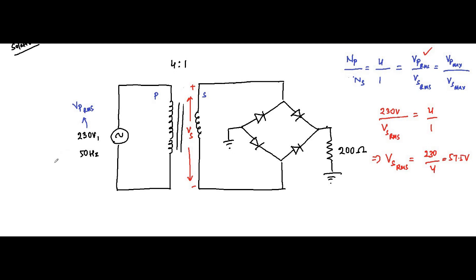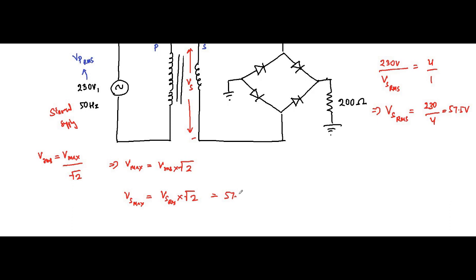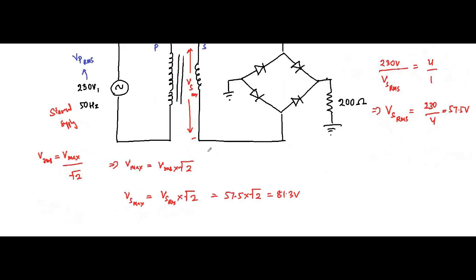This is a sinusoidal supply. For a sinusoidal wave, the RMS value equals V_max divided by root 2, which means V_max equals V_RMS multiplied by root 2. So the maximum value of the secondary winding voltage is 57.5 into root 2, which equals 81.3 volts. Therefore, VS_max is 81.3 volts.